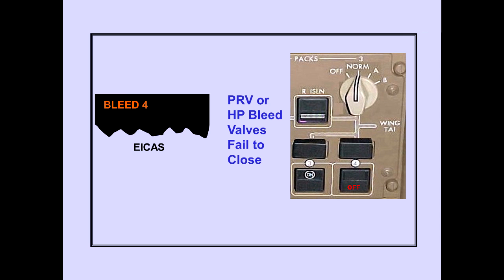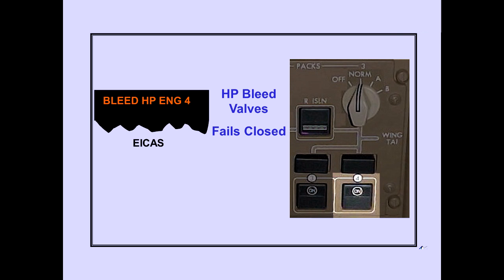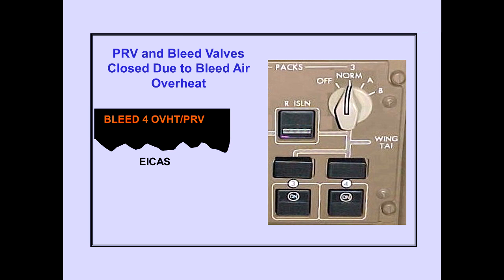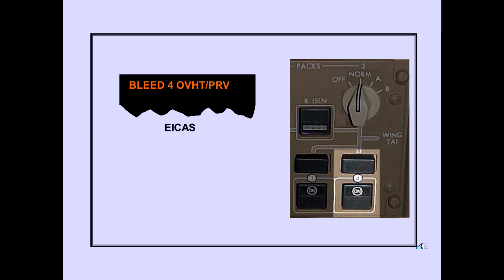The ICAS advisory message 'bleed' is also displayed when the PRV or HP bleed valve fails to close when the engine bleed air switch is off; the system fault light also illuminates. The ICAS advisory message 'bleed HP engine' is displayed when the high pressure bleed valve fails to close. The ICAS advisory message 'bleed overheat / PRV' is displayed when a PRV and a high pressure bleed valve are commanded closed due to bleed air overheat, with the system fault light illuminated. This message is also displayed when the PRV valve fails closed, in which case the system fault light is not illuminated.